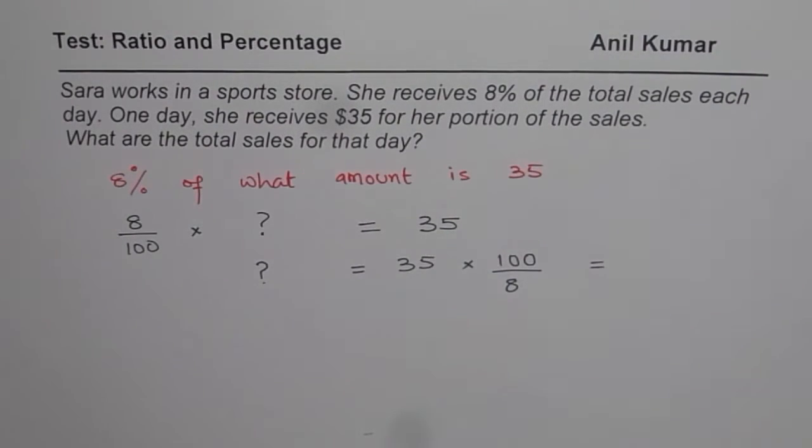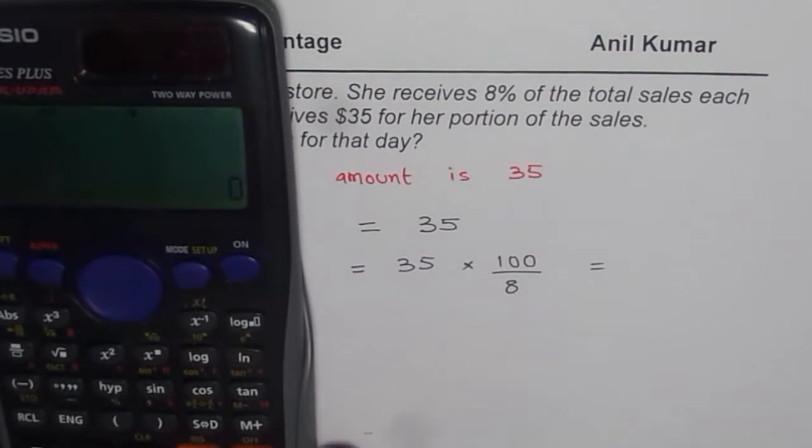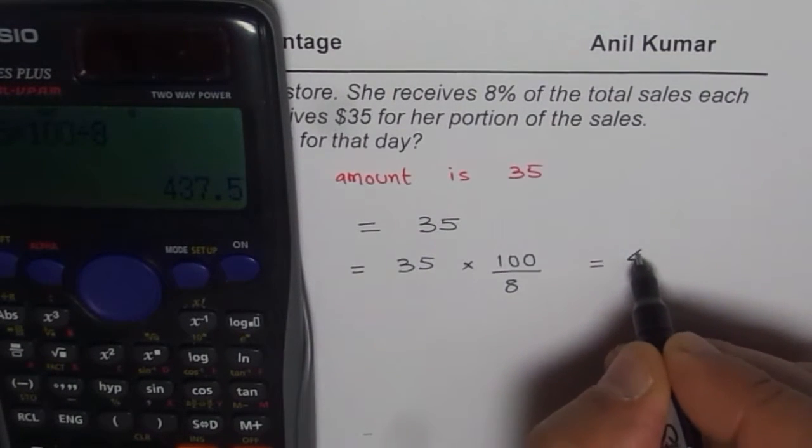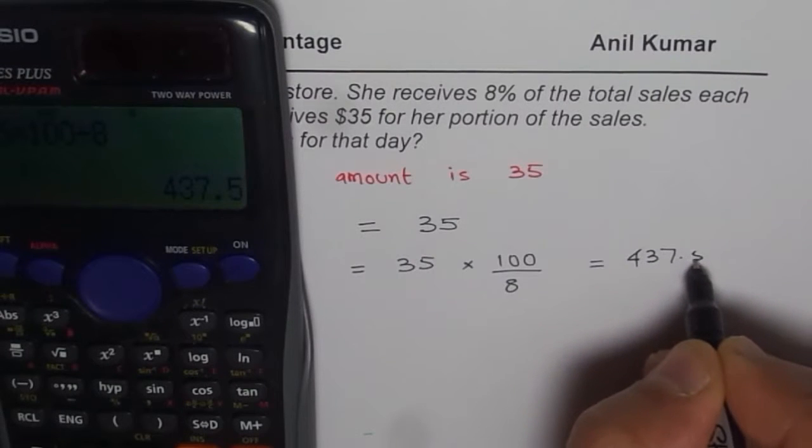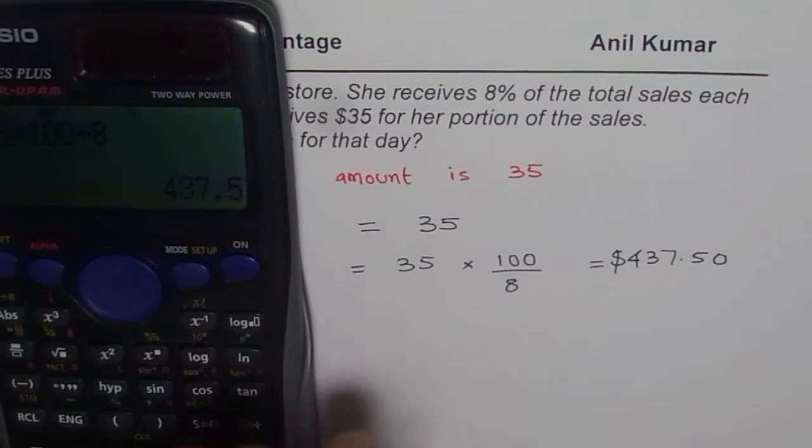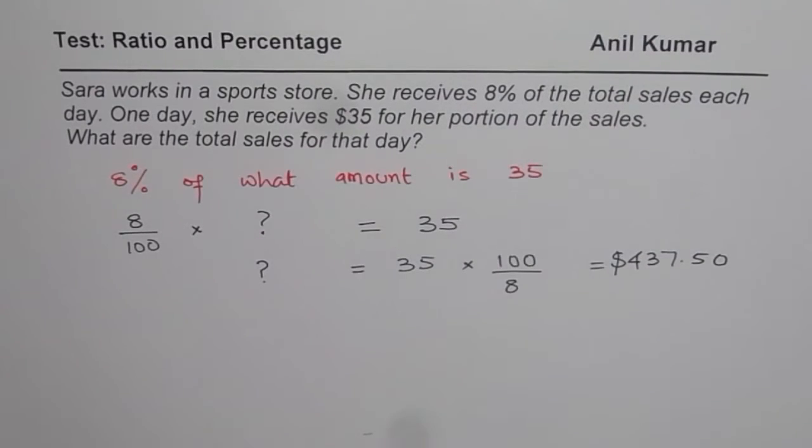And this amount should be how much? Let us use calculator. So we have 35 times 100 divided by 8 equals to. So the amount is $437.50. That is the dollar amount. That is one way of doing it.